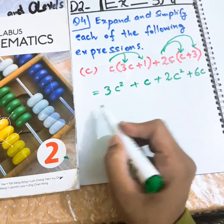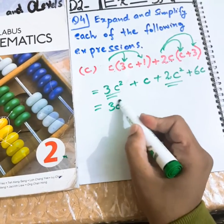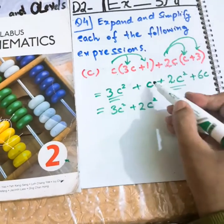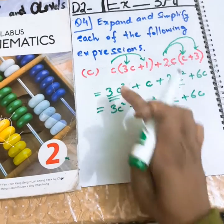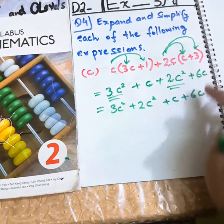Now, the question hasn't finished here. 3C and 2C will be written together. 3C squared plus 2C squared. You can also write with me. Plus C plus 6C. 3C squared here. 3C squared here. 2C squared here. Positive C and positive 6C.